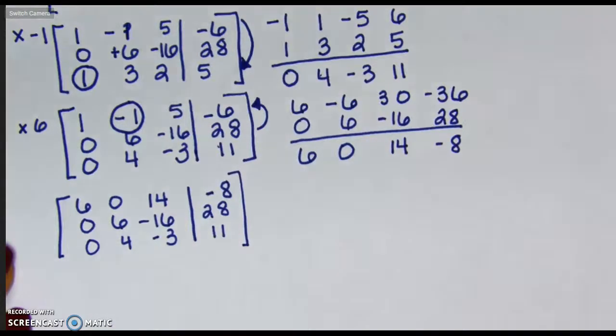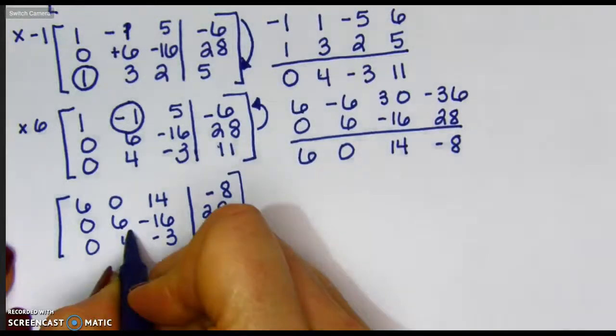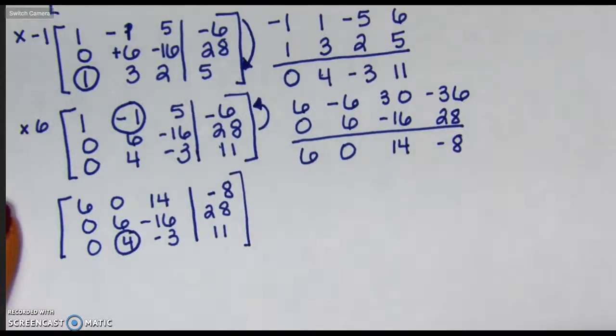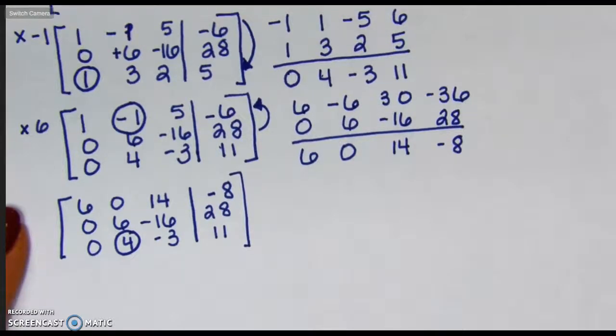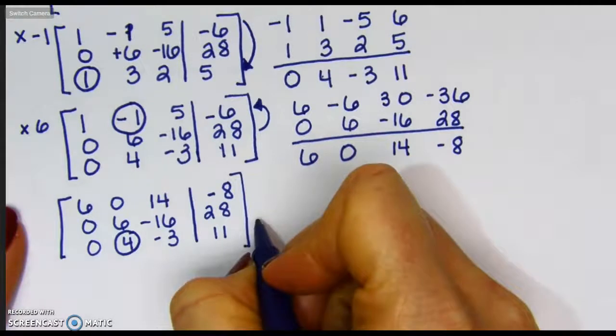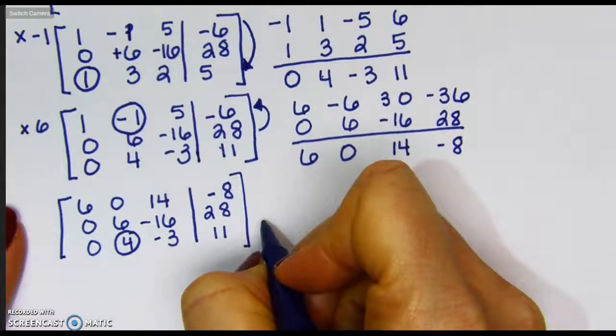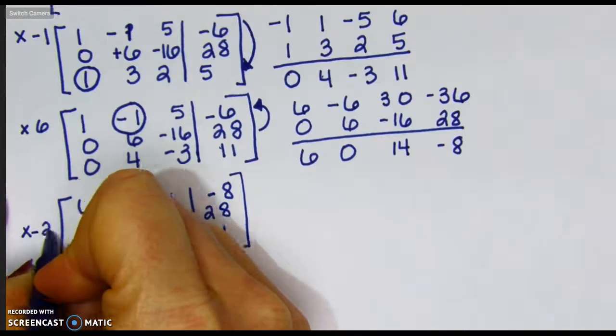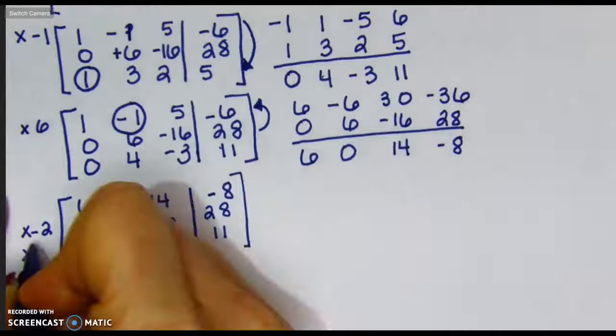The next position that we need to obtain into a 0 would be 4. The only other option I can use is the middle row. So I'm going to build between 6 and 4, the least common multiple being 12. Now you can choose any number that they have in common. However, I find that the least common multiple is the easiest to obtain. So notice that they're both positive, so I'll need to multiply one of them by a negative value. So I'm going to multiply the middle by negative 2 and multiply the bottom by 3.